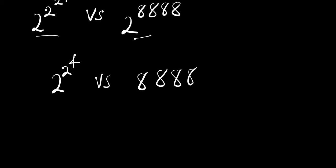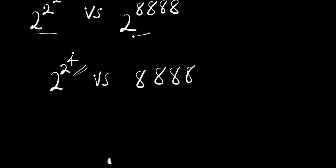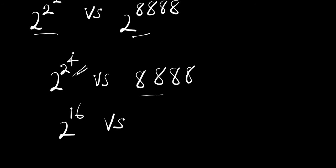The next thing we are going to do is consider these two numbers. Two power four — let me check — yes, two power four is 16. So we have two power 16 on the left side, versus eight eight eight eight on the right, which we can factor out as eight times 1111.